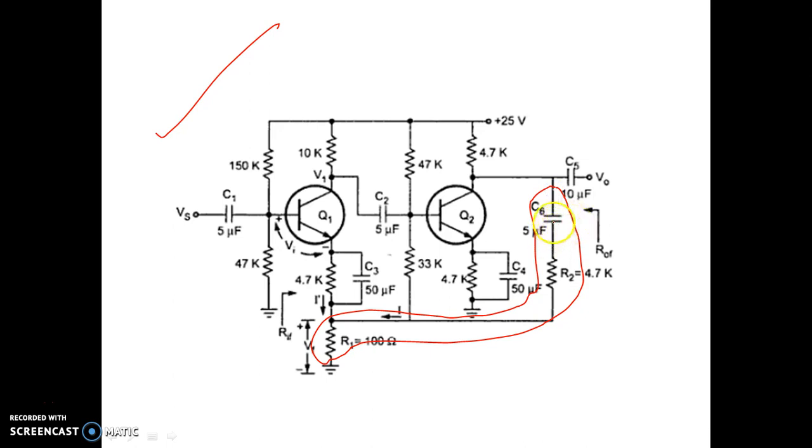Now, the second step. This is the starting point of the feedback network on the output side and from the same node we are taking the output voltage. That means the positive terminal of the output voltage and the starting point of the feedback network on the output side are in the same node. So no doubt, this is voltage sampling because if they are in the same node, then we say that is voltage sampling. If they are in different nodes, then we say that is current sampling. So as the two points are in the same node, no doubt, this is voltage sampling.